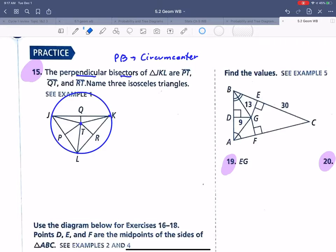It says the perpendicular bisectors of triangle JKL are PT. So this is a perpendicular bisector that cut JL in half. R was the midpoint of LK, and this is the perpendicular bisector. Each of those are the perpendicular bisectors. It says name the three isosceles triangles. As we look at this, I'm hoping you're noticing three isosceles triangles. Here's an isosceles triangle, because we know these two sides are congruent because they would be radiuses, or also known as radii.